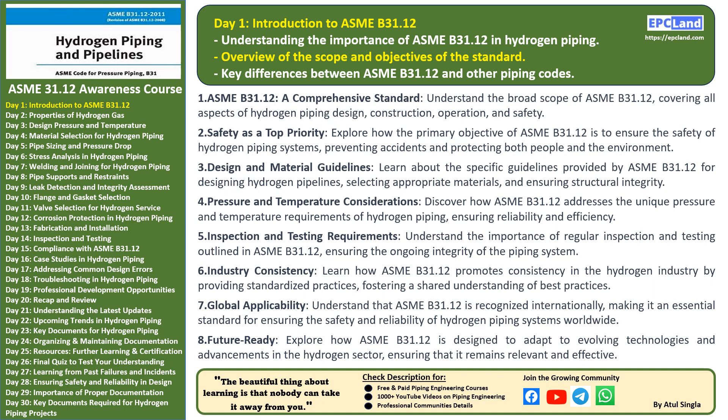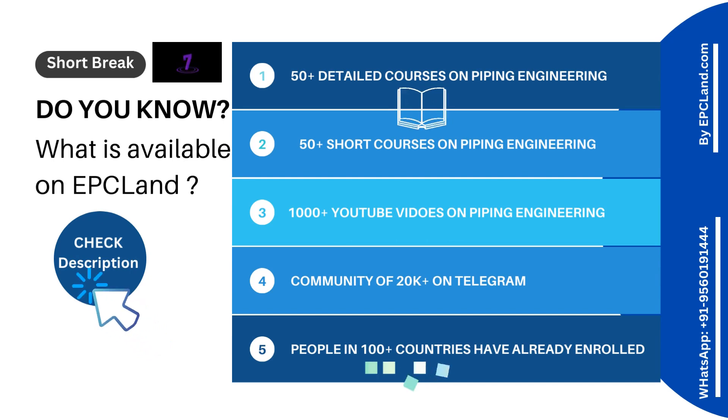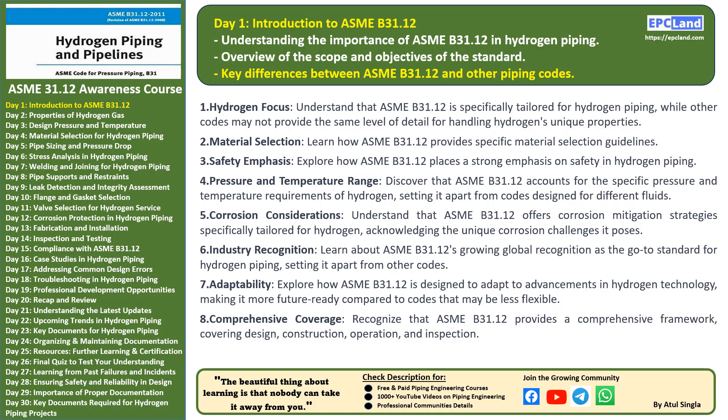What sets ASME B31.12 apart? What are the key differences between it and other piping codes? Today we're digging into those distinctions, which are crucial for understanding how ASME B31.12 is uniquely tailored to handle the challenges of hydrogen piping. Firstly, ASME B31.12 is all about hydrogen — it's specifically designed to address the intricacies of handling hydrogen as a fluid in piping systems. Other codes, while valuable for their intended purposes, might not provide the same level of detail when it comes to the distinct properties of hydrogen.